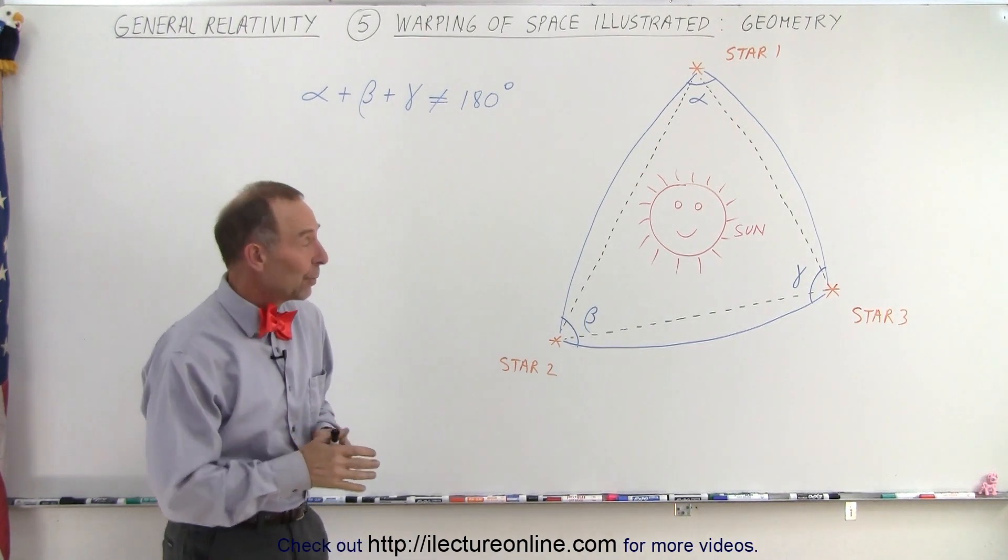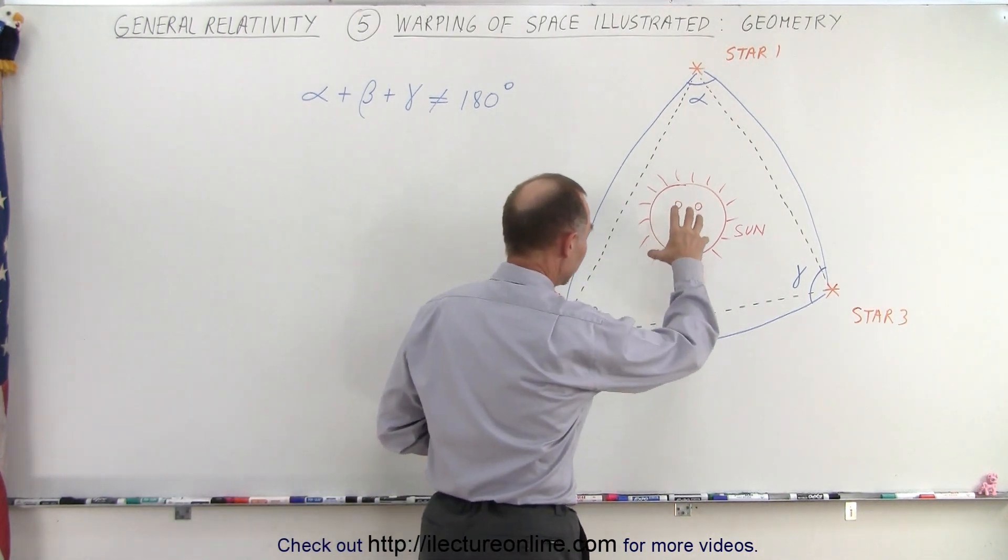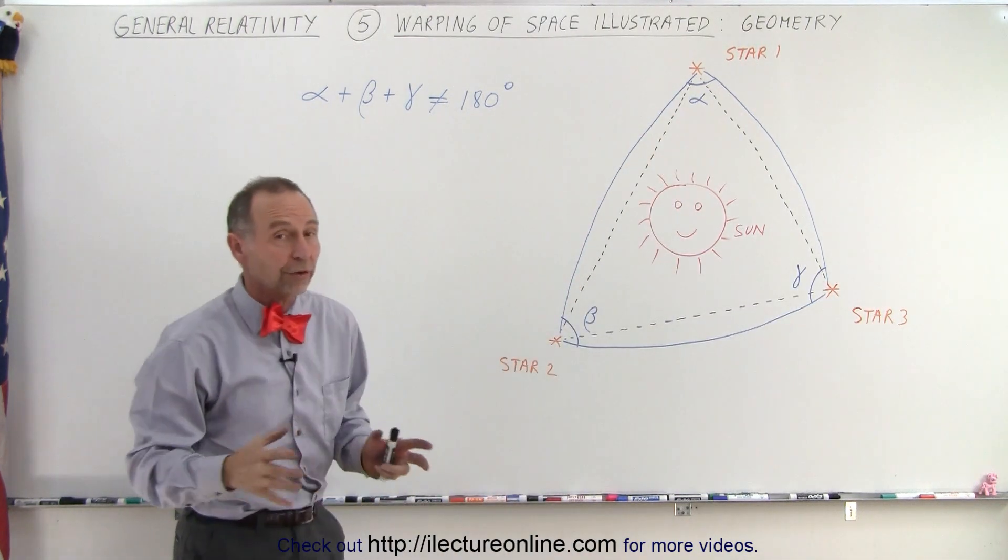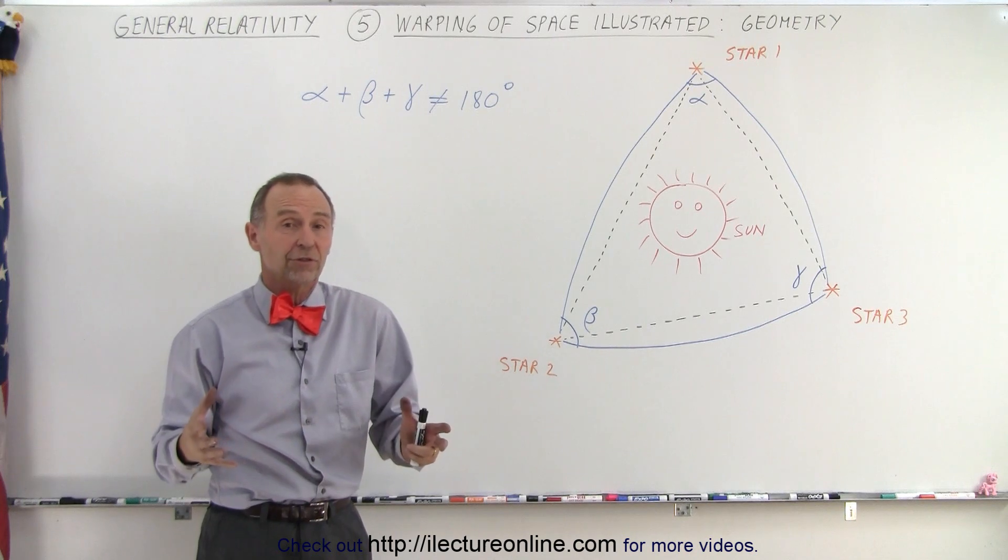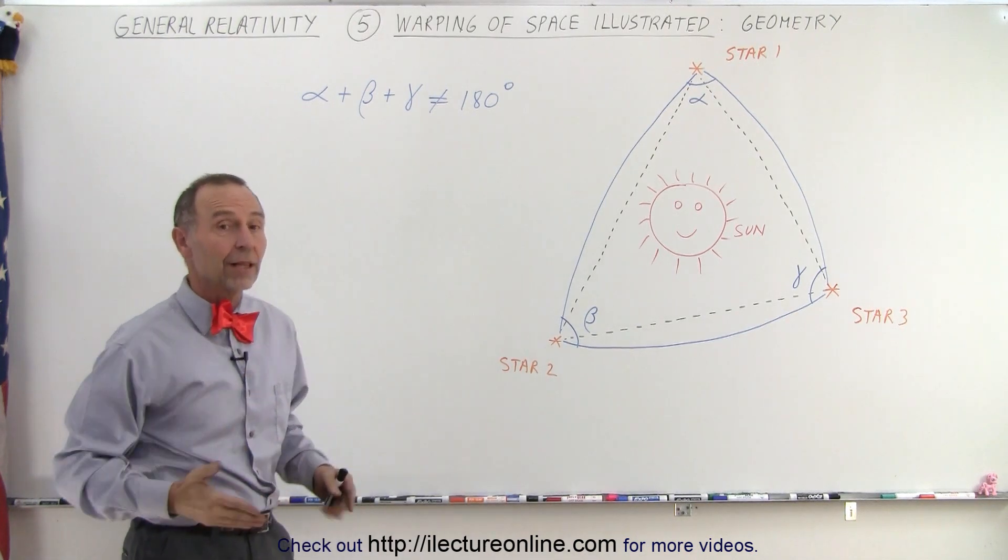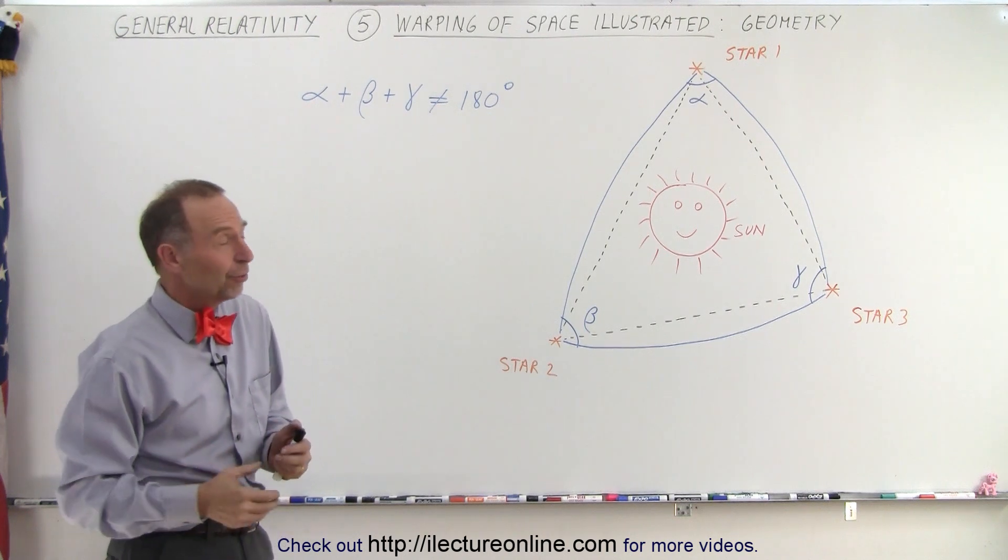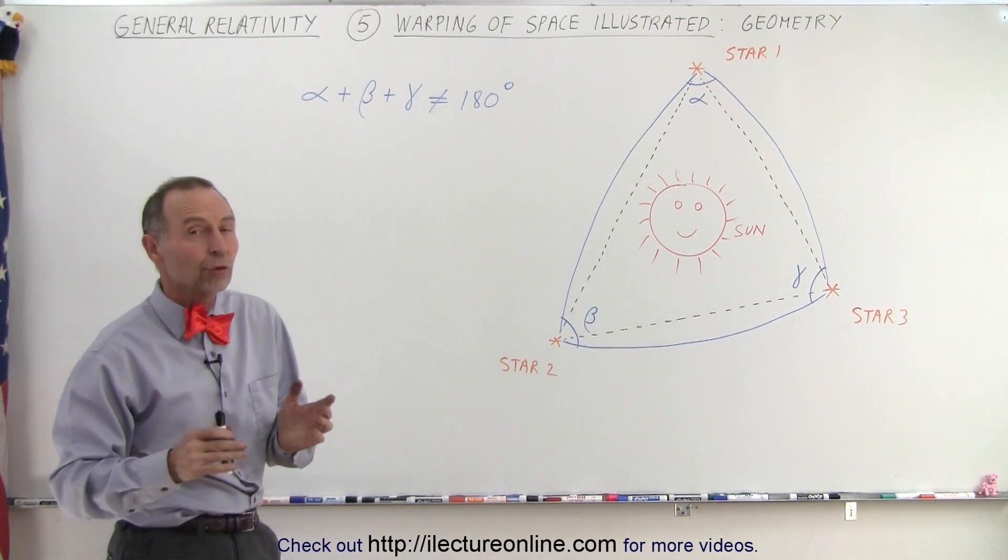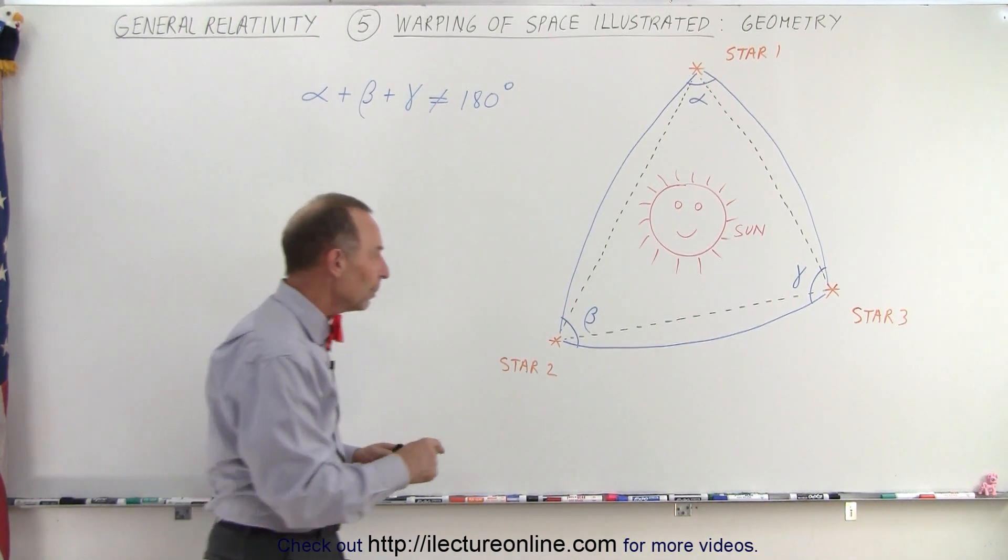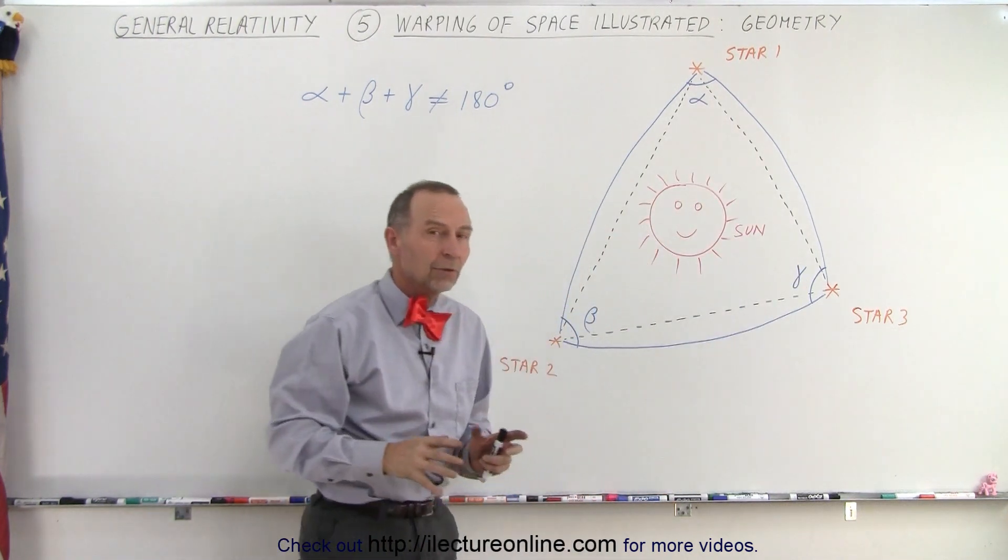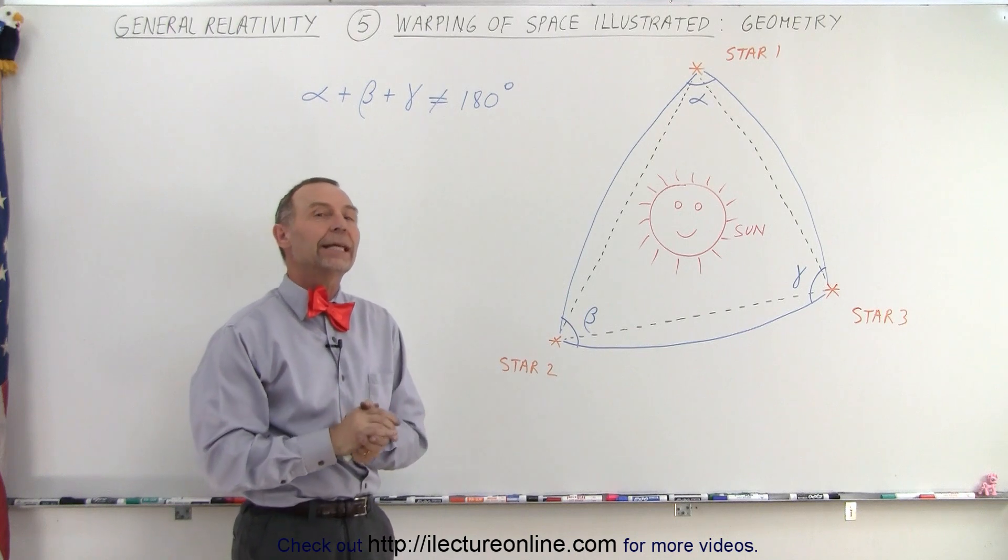For example, let's say that we have the Sun right here in the middle. Let's say there's three stars. Let's call them star 1, star 2, and star 3. Any three stars, when you connect them with straight lines, they form a triangle. Any three stars in space will form a triangle. And we all know that when you add up the angles between those straight lines, those angles always add up to 180 degrees.